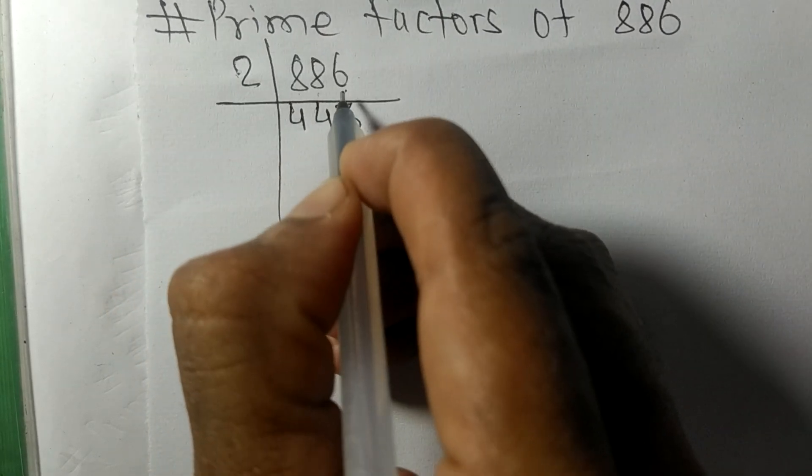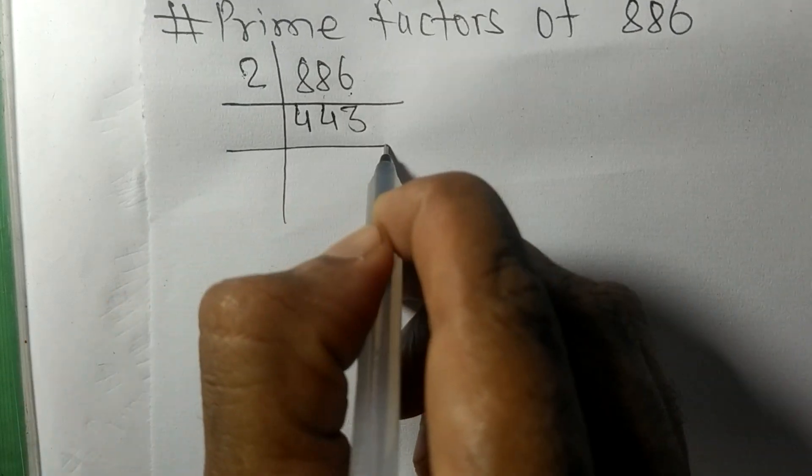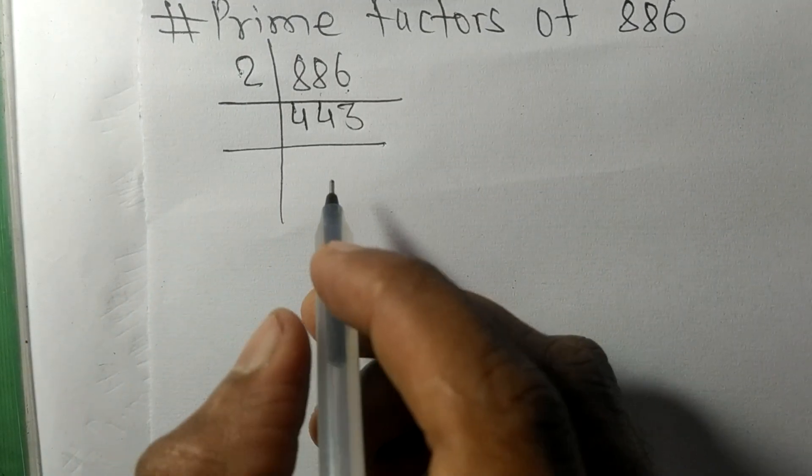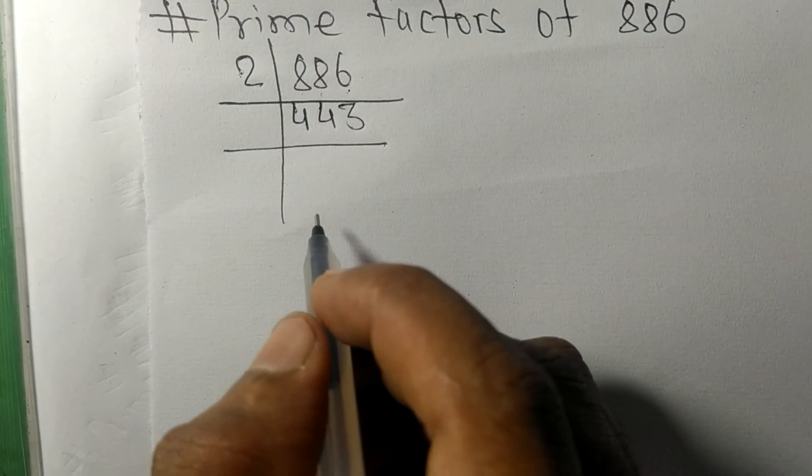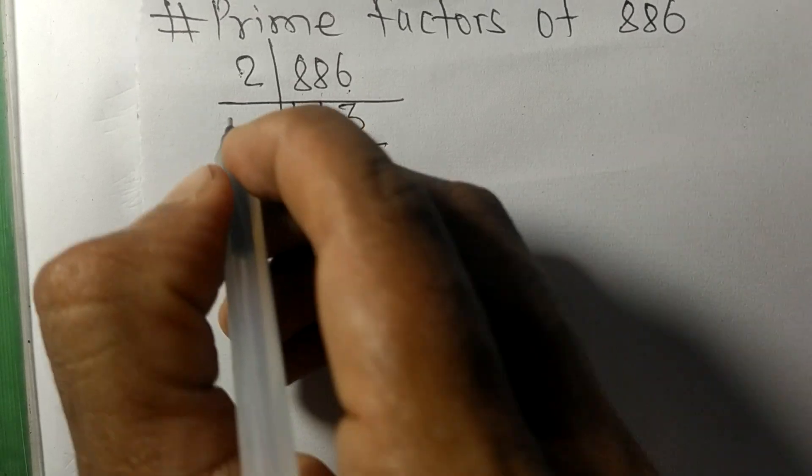Now we got 443 which is a prime number, so it is exactly divisible